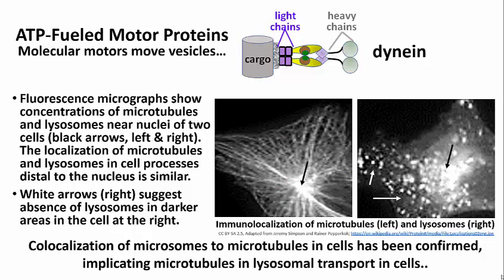As part of the cytoskeleton — and you'll see this is true also of actin and intermediate filaments — microtubules not only give a cell shape, but they also function as a kind of scaffold on which various cellular structures and organelles are hung.